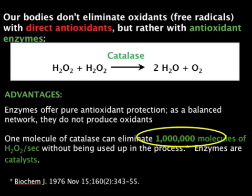It's very important to make this distinction: things like vitamin C and vitamin E are actually creating free radicals — they are pro-oxidants, not antioxidants as we thought before. We now have in vivo studies that show these are actually pro-oxidants. One molecule of catalase can neutralize up to one million free radicals per second, every second.